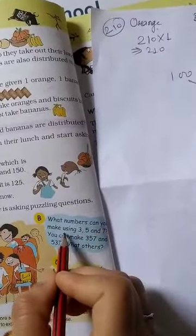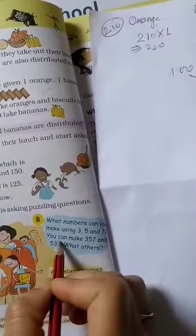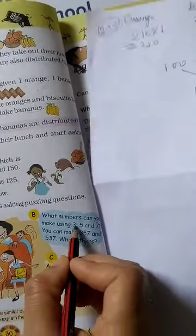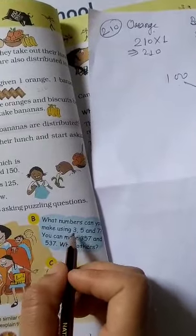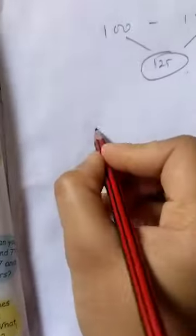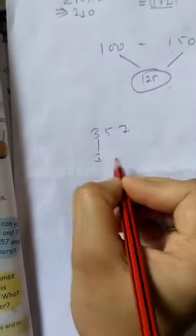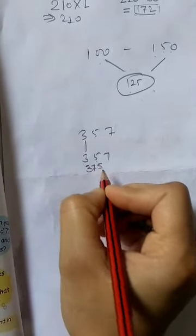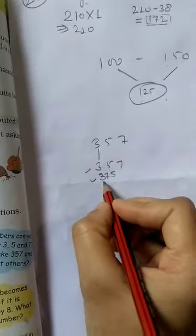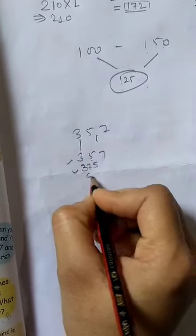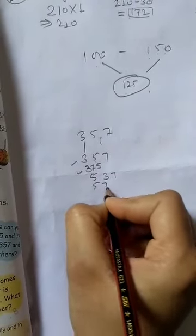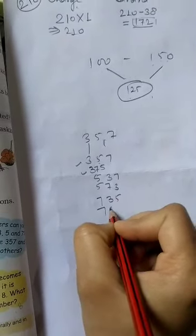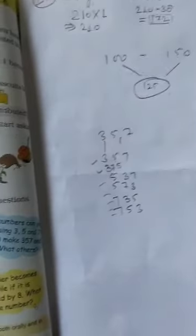Another child asks: what numbers can you make using the digits 3, 5, and 7? You can make 357, 375, 537, 573, 735, and 753. First keep 3, then interchange 5 and 7. Then keep 5, arrange with 3 and 7. Then keep 7, arrange with 3 and 5. We can make six different numbers using these three digits.